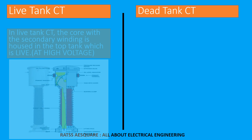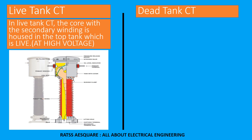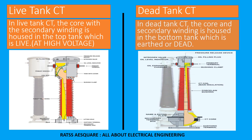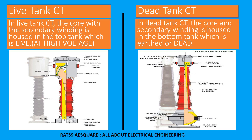In live tank CT, the core with the secondary winding is housed in the top tank, which is live at high voltage. In dead tank CT, the core and secondary winding is housed in the bottom tank, which is earth or dead.